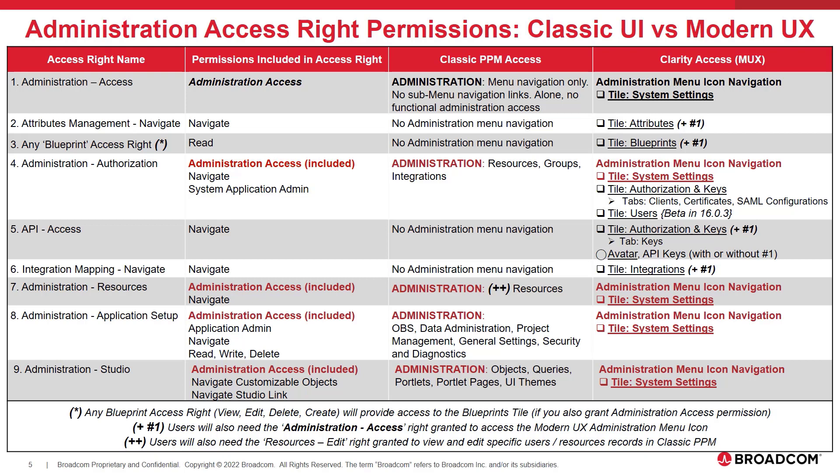Some of the other rights require a combination of adding the administration access right for navigating into the menu. The administration access to attributes, blueprints, API access, and integration mapping are only available in Clarity.